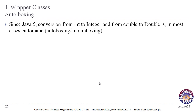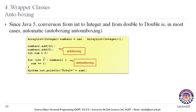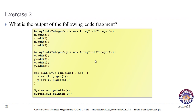AutoBoxing: since Java 5, conversion from int to Integer and from double to Double is in most cases automatic — this process is called autoBoxing and autoUnboxing. For example, with an ArrayList of type Integer, adding integer numbers is done automatically via autoBoxing. Going through the numbers and converting integers into Integer objects automatically is called autoUnboxing. You can go through these code fragments and try to figure out the output.